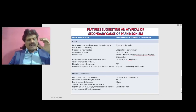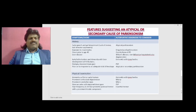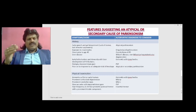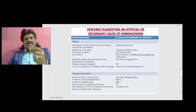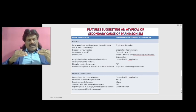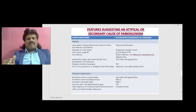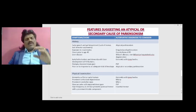Features in the history suggesting an atypical or secondary cause of parkinsonism: early speech and gait impairment, lack of tremor, and lack of motor asymmetry suggest atypical parkinsonism. Exposure to neuroleptics suggests drug-induced parkinsonism. Onset prior to age 40 suggests genetic forms of Parkinson's disease. Liver disease suggests Wilson's disease or non-Wilsonian hepatolenticular degeneration. Early hallucinations and dementia with later development of parkinsonism suggests dementia with Lewy bodies. Diplopia and impaired downward gaze suggests progressive supranuclear palsy. Poor or no response to an adequate trial of levodopa suggests atypical or secondary parkinsonism.